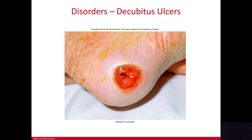Decubitus ulcers — sometimes shortened to 'decubes' — begin as reddened areas on the skin, especially over bony areas. With continued pressure they can blister, and eventually the skin wears away leaving open wounds. These wounds can be superficial or deep and can extend through subcutaneous and muscle tissue, even down into the bone. Nutritional status of the patient is very important, along with mobility, as both affect wound healing.